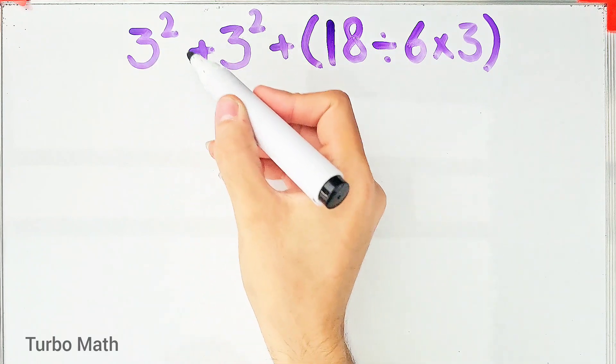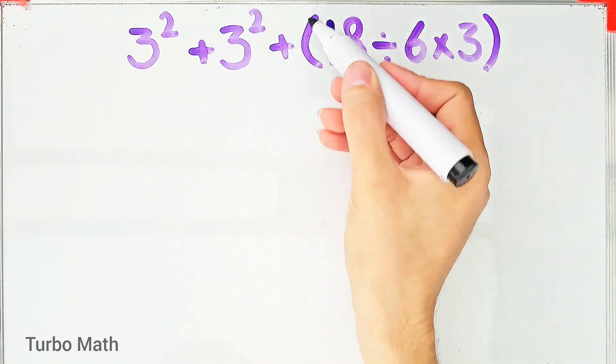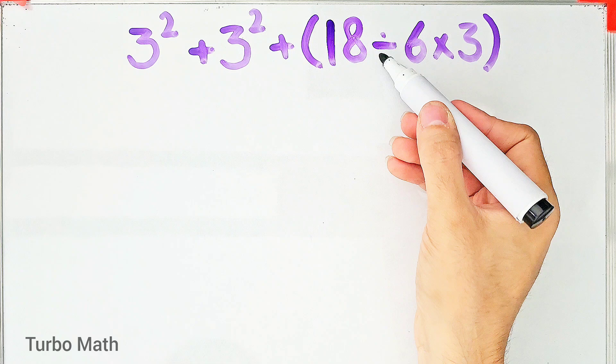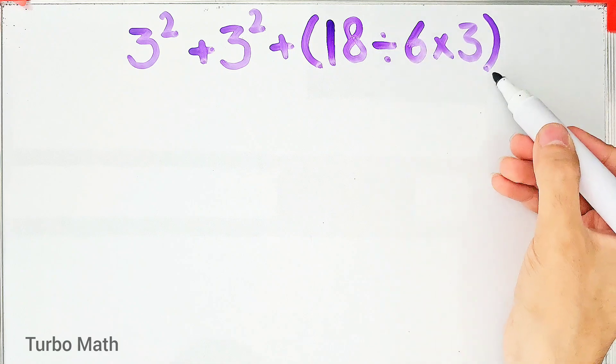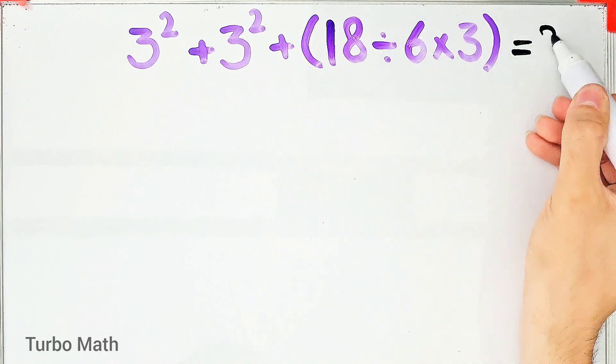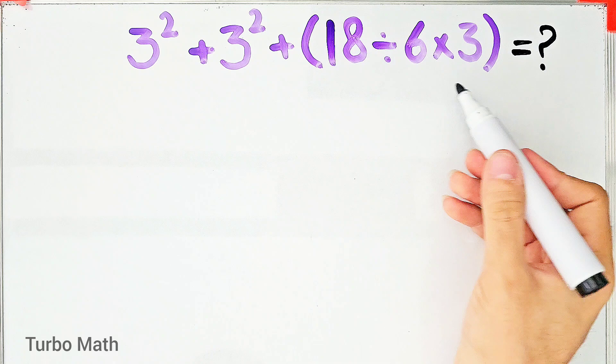3 to the power of 2 plus 3 to the power of 2 plus open parentheses 18 divided by 6 then times 3 closed parentheses. What is the answer of this question? Can you solve it?